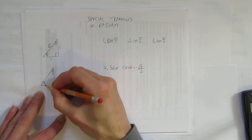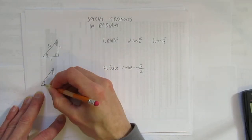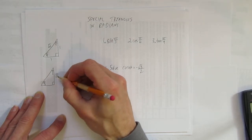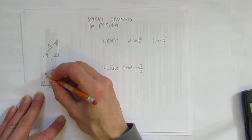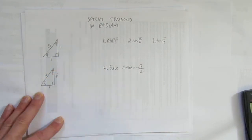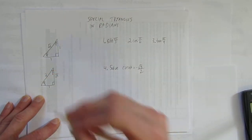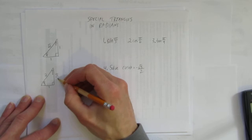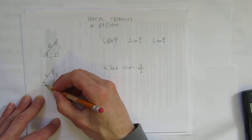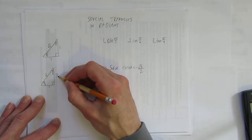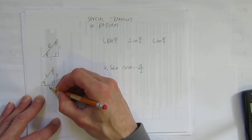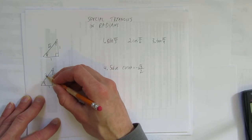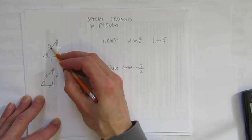The side lengths haven't changed. Across from the big angle pi over 3 is root 3. Across from the smaller angle pi over 6 is 1. The hypotenuse is 2. Be careful — a lot of people mess up this one because they see a 3 and think of pi over 3 as 30 degrees. Remember: pi over 3 is 60 and it's across from the big side. Pi over 6 is 30 and it's across from the little side.